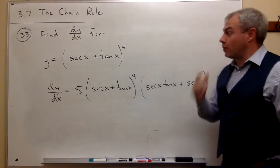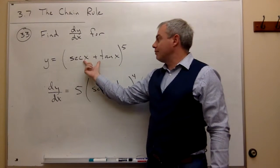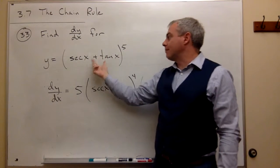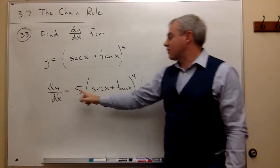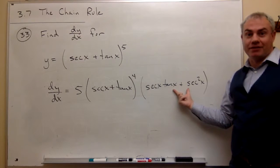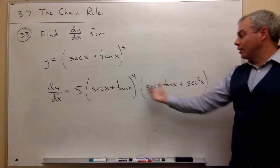So let's review real quick what we did here. We had something raised to the fifth power. And we said, what's the derivative of something to the fifth? Well, it's five somethings to the fourth times the derivative of the something. And we get our answer.